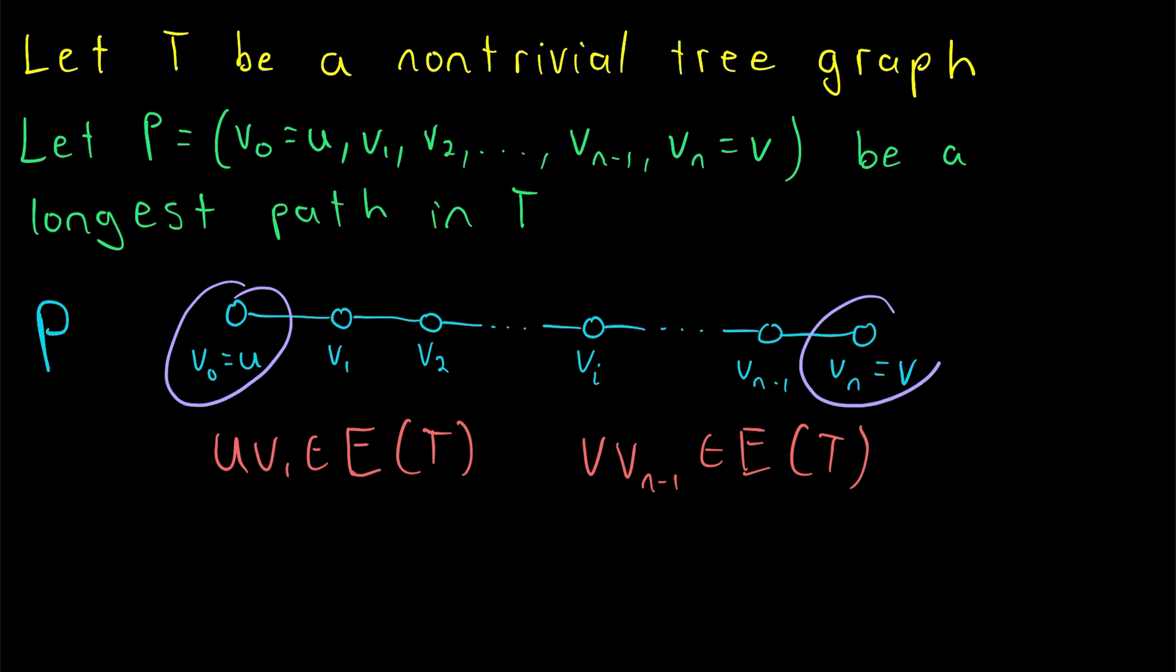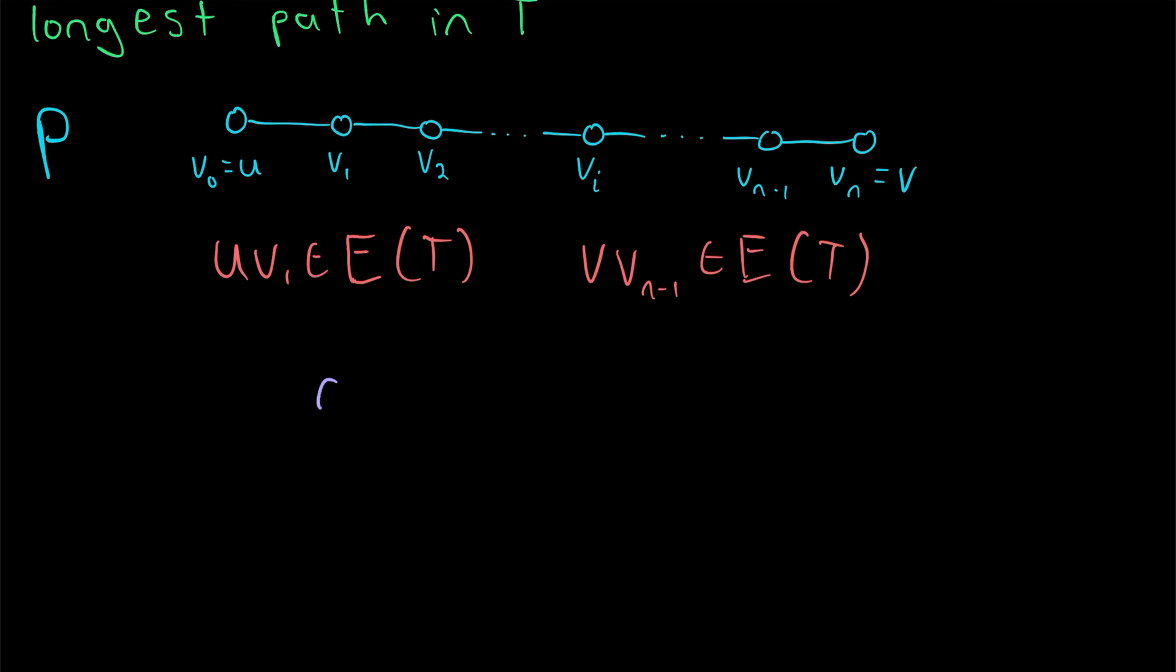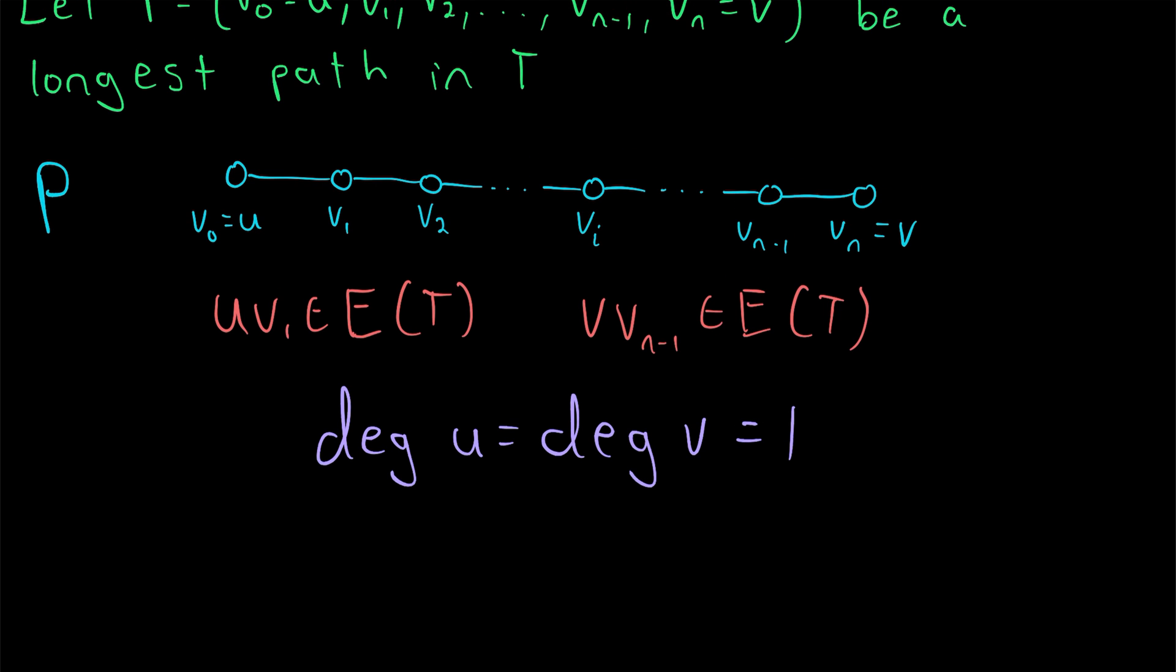So U and V each have one neighbor on the path P, and they have no neighbors that are not on P. And so what does that mean? Well, that means, of course, that the degree of U is equal to the degree of V, which is equal to one. They both have a degree of one. They are both end vertices. And so we have proven in any non-trivial tree graph, we will always have at least two end vertices. All we have to do is take a longest path in the graph, and then the first vertex and the last vertex of that path will be end vertices.